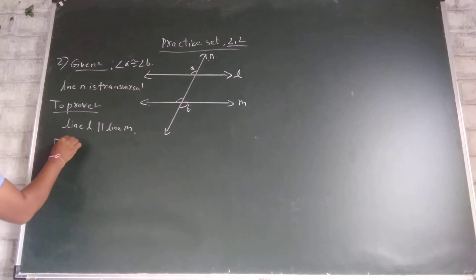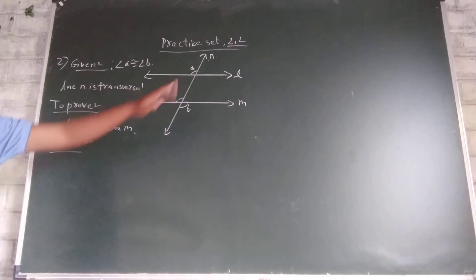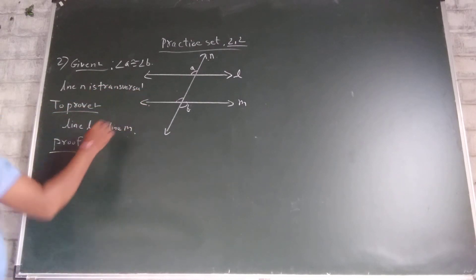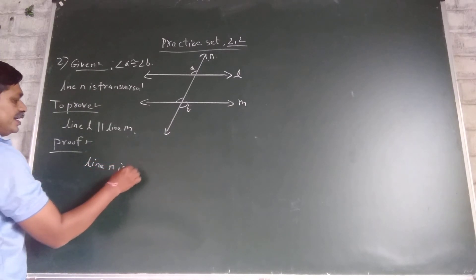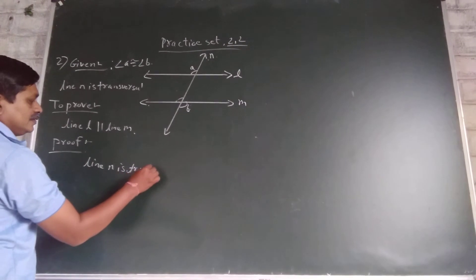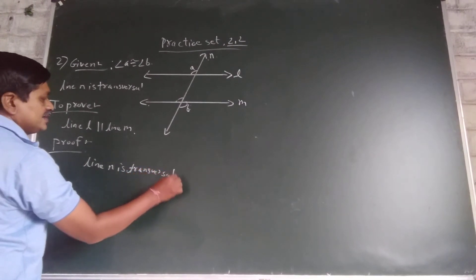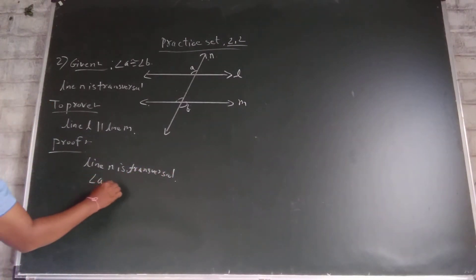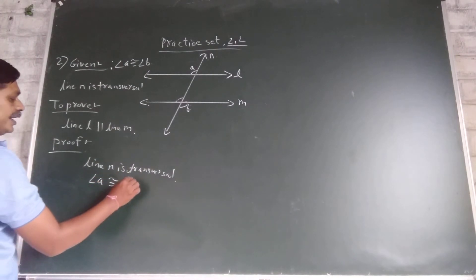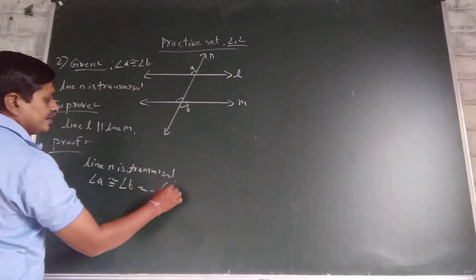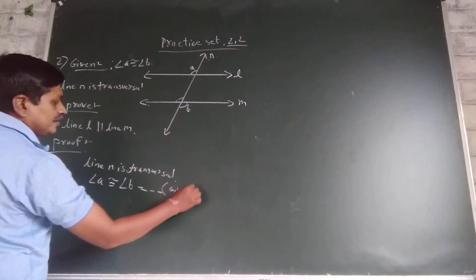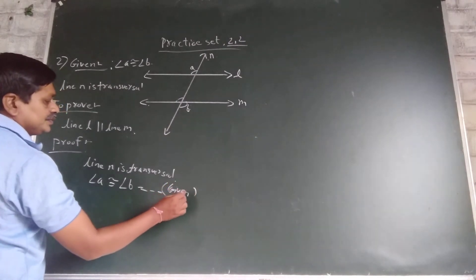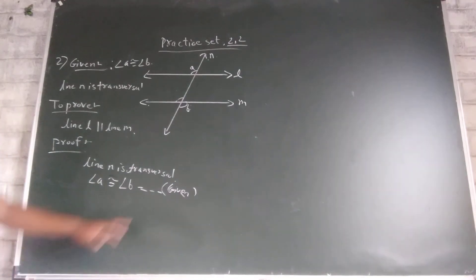Now prove. See, line N is a transversal. Angle A congruent to angle B given.